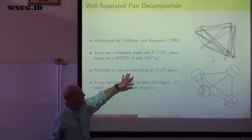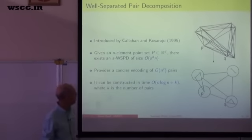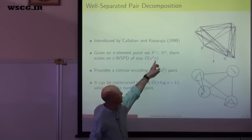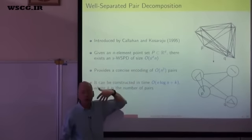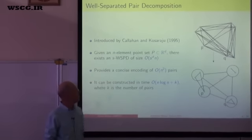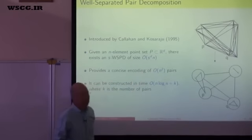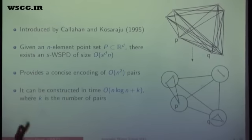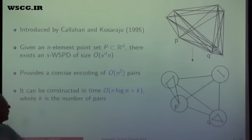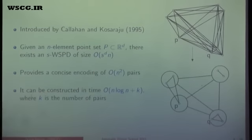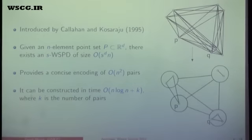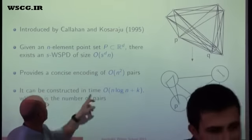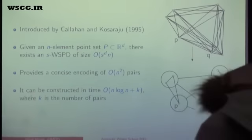You can think of this as a way of providing a concise encoding of the N² pairs of your set. Depending on S, if N is a very large number — perhaps hundreds of millions of points — and S depends on the accuracy of your computations, if you want epsilon error then S is going to be of the form 1/epsilon. The error term grows essentially as S raised to the power of the dimension. It can be constructed in time essentially N log N plus a value linear with the size of the output.